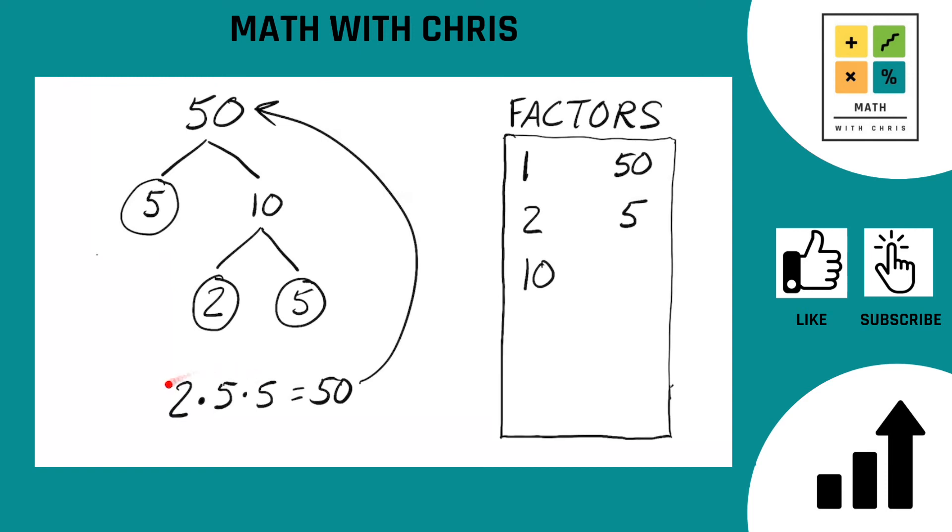And now is there any other combination of these three factors down here, 2, 5, and 5, that can multiply together to give us a number not in the bank yet? Well, 2 times 5, we already have the 10. 2 times 5, we already have that 10. What about 5 times 5? 5 times 5 is of course 25. That needs to get added. So let's do that. And that's all the combinations. So we are done.